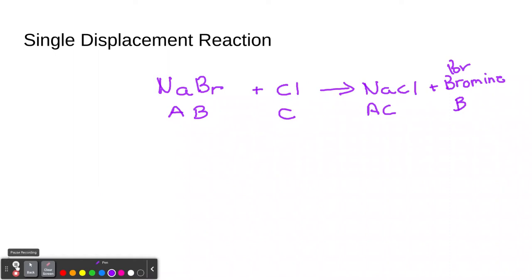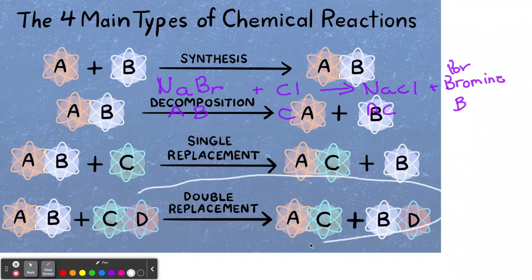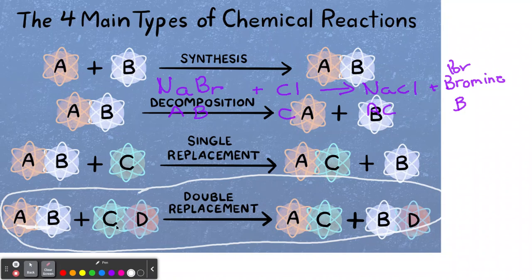By the way, sodium bromide (NaBr) is used as a sedative. Now we have our double displacement reaction — we have two compounds, and they're going to create two new compounds. Study it: A was with B, but now A is with C; C was with D, but now C is with A and D is with B. Two compounds creating two new compounds.